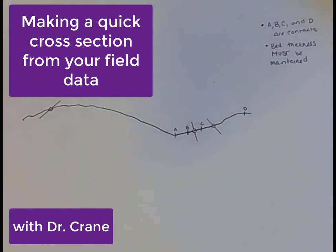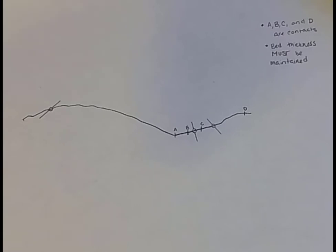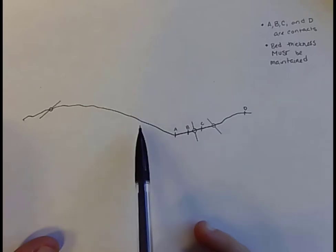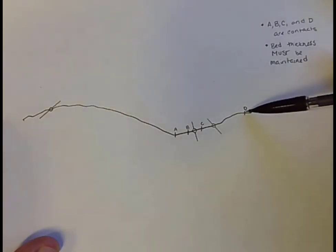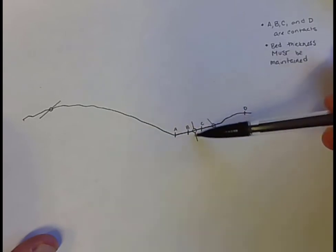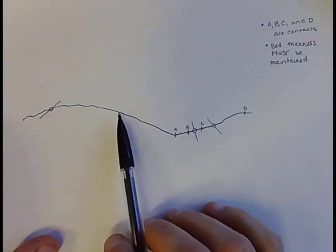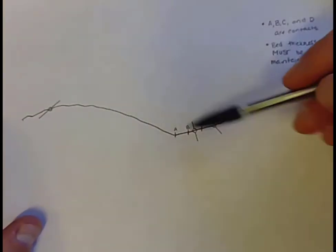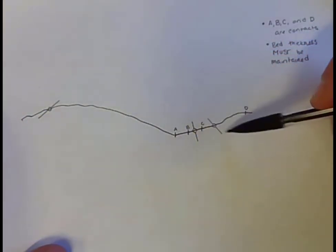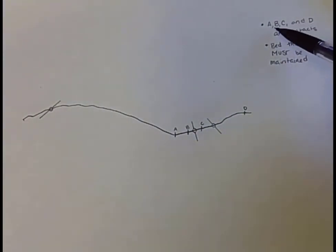In this video we're going to talk about how you could do the kink method if you have surface information collected while in the field. Here I've imagined some topography, places where I've marked my contacts, and over here on this hill I have a strike and dip piece of information — a dip here and a dip here. Letters A, B, C, and D are contacts, bed thicknesses must be maintained, and we're going to think about how to use kink method to build this cross-section.